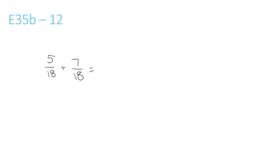Final question. 18 and 18, they're both already 18, so we don't have to do anything. We can just add the top numbers to get 12 over 18. This can be divided by 6. 12 divided by 6 is 2, over 18 divided by 6 is 3.